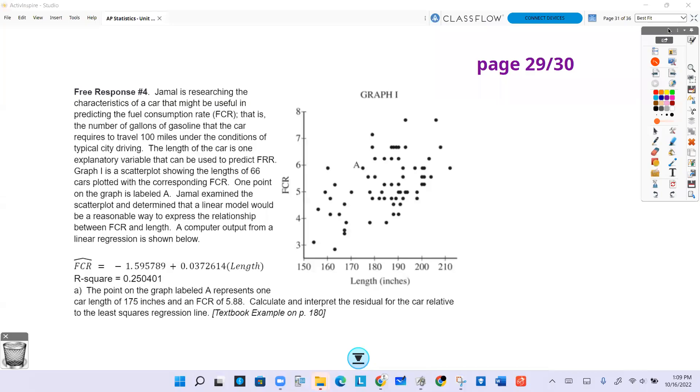This is free response number four, the last of the review questions. Jamal is researching the characteristics of a car that might be useful in predicting the fuel consumption rate, FCR, which is the number of gallons of gasoline that the car requires to travel 100 miles under the conditions of typical city driving.